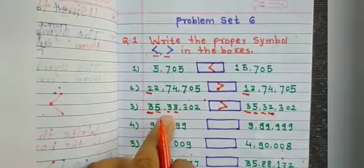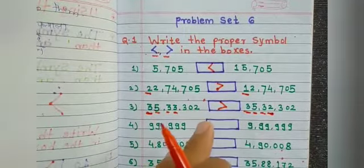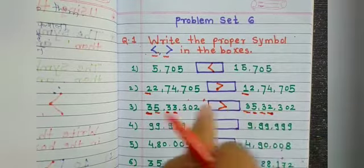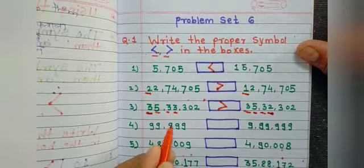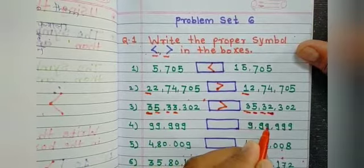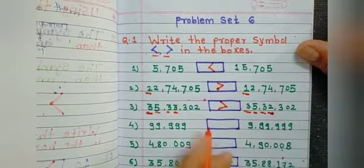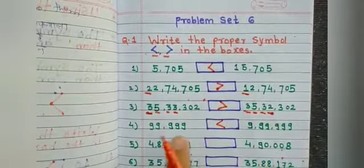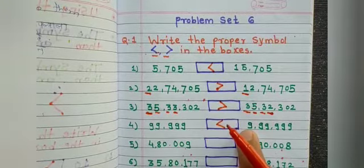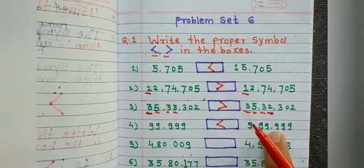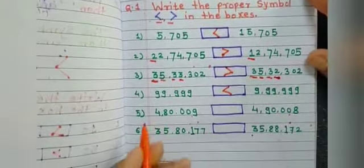35 lakh 33 thousand 302. This number is 35 lakh 32 thousand 302. Next we have 9,99,99,999.